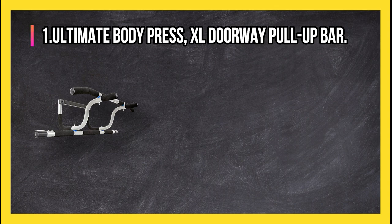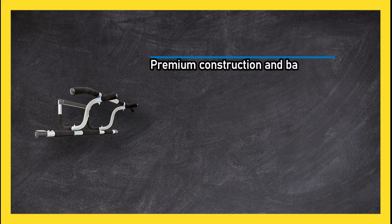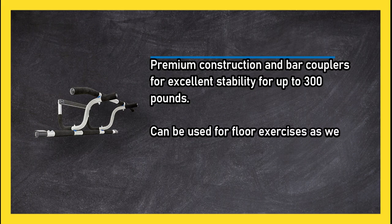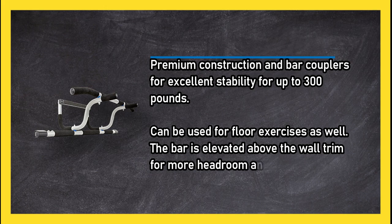At number one: Ultimate Body Press Excel Doorway Pull-Up Bar. Premium construction and bar couplers for excellent stability for up to 300 pounds. Can be used for floor exercises as well. The bar is elevated above the wall trim for more headroom and better range of motion.